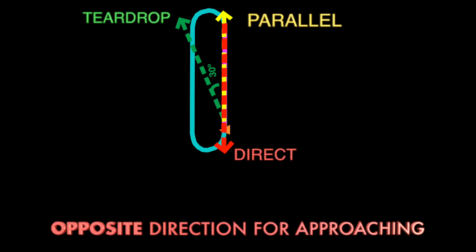By now, you may have already figured it out. Between the three entry types, it looks like the parallel entry is the smoothest transition for the aircraft to line up with the initial segment of the entry procedure. A smaller angle of turning compared to the teardrop entry.